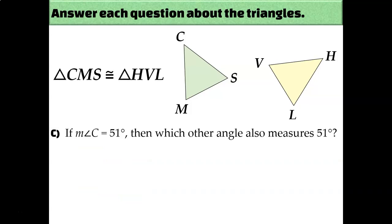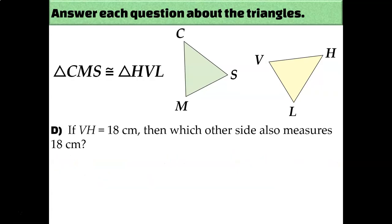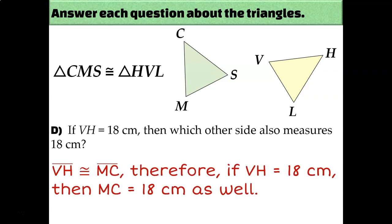We can also use this congruence statement to help us identify missing angle measures and missing side lengths. For example, if I knew that angle C measured 51 degrees, then angle H must also be 51 degrees, because C and H are the first letters in each triangle's name — they correspond, and since the triangles are congruent, their corresponding angles are congruent. So angle H measures 51 degrees as well. If I knew that side VH was 18 centimeters long, then side MC is also 18 centimeters, since V and H are the first two letters of the second triangle's name and M and C are the first two letters of the first triangle's name — those sides correspond and are congruent.